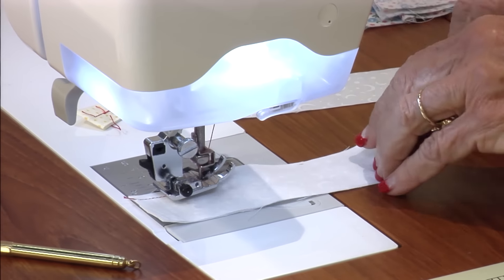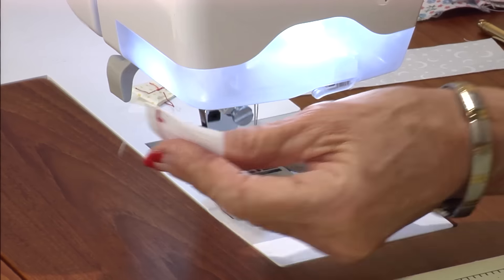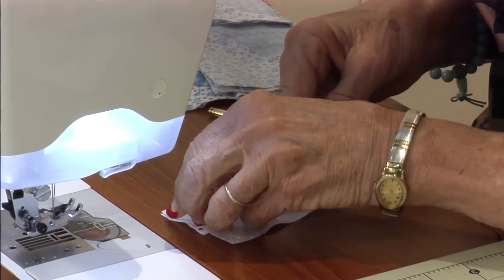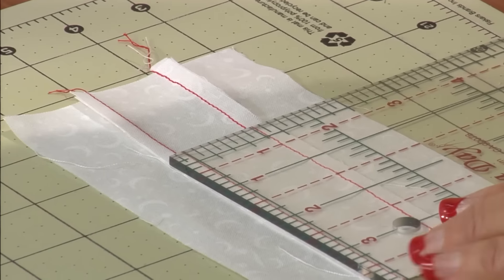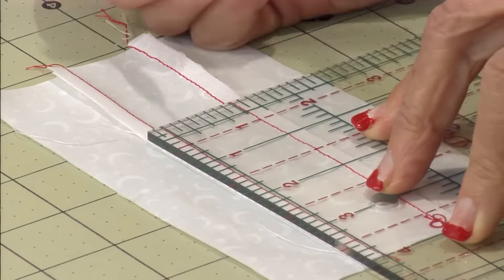The strips are one and a half inches wide and they have to measure three and a half inches when they're sewn together. So take the seam test and measure. Check with your ruler.